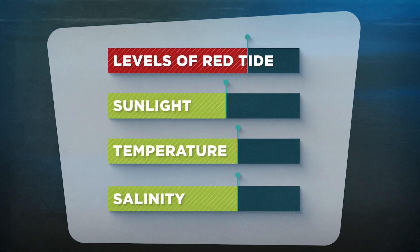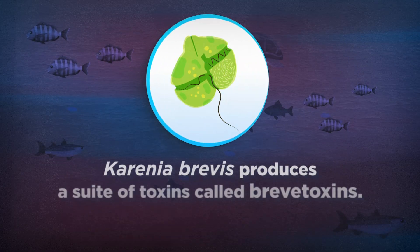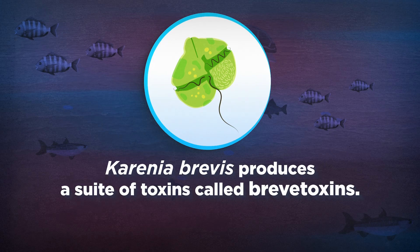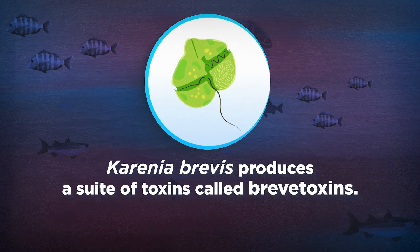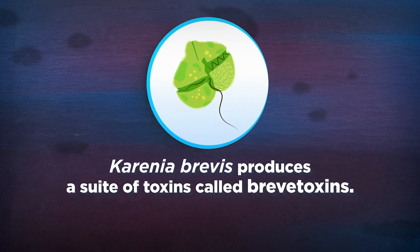Red tide can occur throughout the water column and blooms are often patchy. Karenia brevis produces a suite of toxins called brevitoxins that can affect the central nervous system of fish and other marine life such as seabirds, sea turtles, and marine mammals, causing these animals to become sick and die.